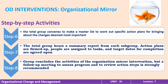In step six, after the small groups have identified the key problems, the total group convenes to make a master list and to work out specific action plans for bringing about the changes deemed most important.